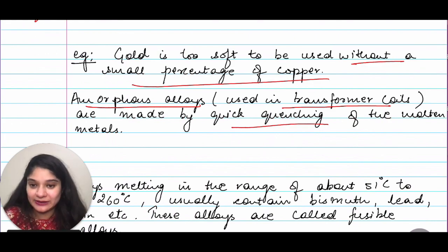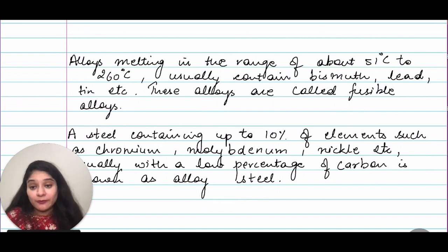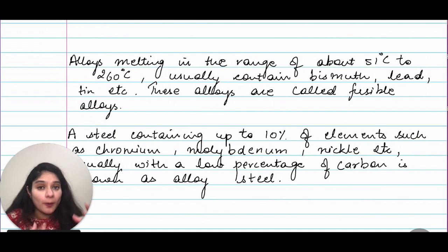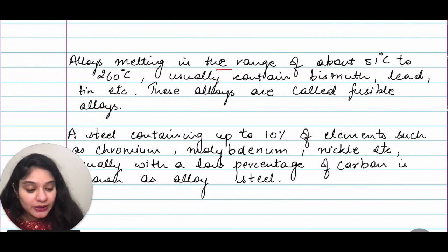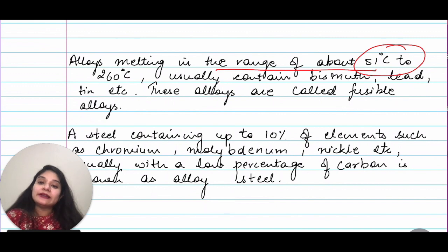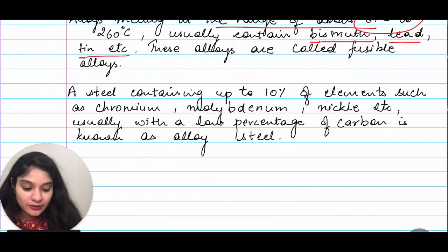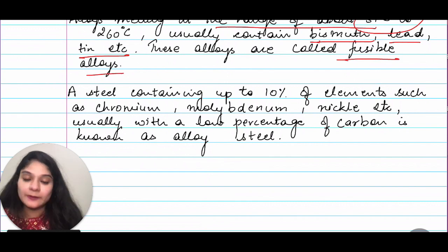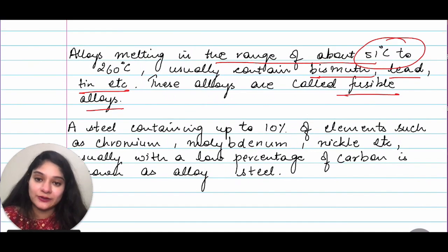Alloys' melting range is about 51 degrees Celsius to 260 degrees Celsius — this depends upon what kind of metals are used and what properties are combined. Alloys containing bismuth, lead, tin, etc. are called fusible alloys. A steel containing up to 10% of elements such as chromium, molybdenum, nickel, etc., usually with a low percentage of carbon, is known as alloy steel. Steel is very strong, and the alloy is made by combining these elements with low carbon content.